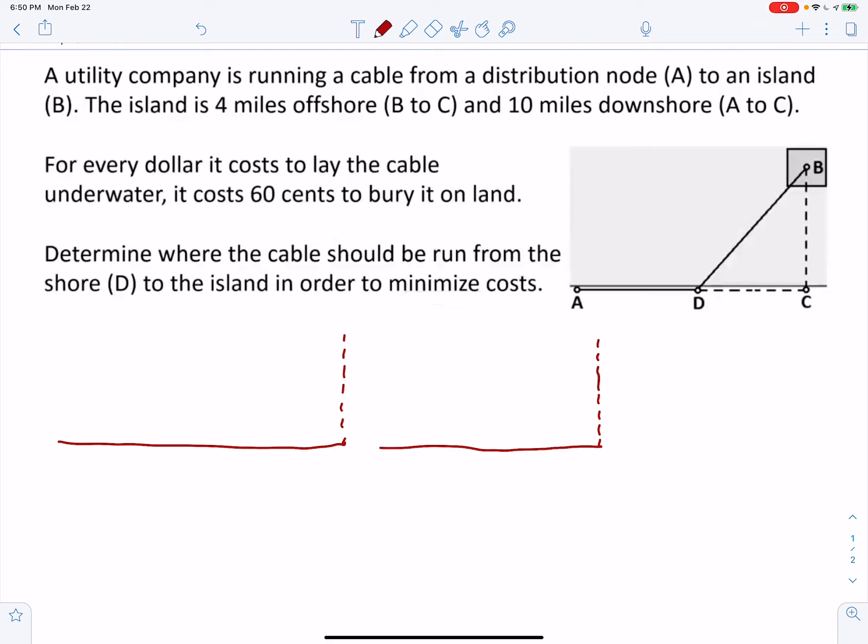Look at this problem. So there's options. One option is we could go from A directly to C all the way across. Now remember, that's 10 miles as it says right here. So the shoreline we're working with is 10 miles wide. And it's 4 miles to get from the shoreline to the island, at least straight line distance there.